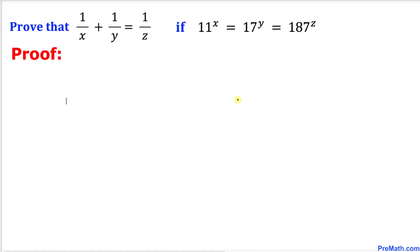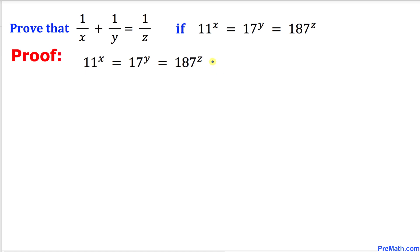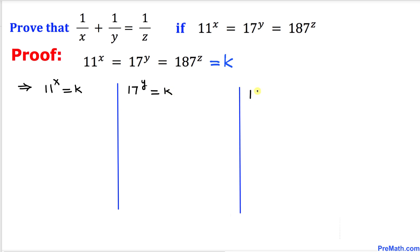Let's get started with the proof. Focusing on the given equation 11^x = 17^y = 187^z, let's set this equal to k. We can then write 11^x = k, 17^y = k, and 187^z = k.